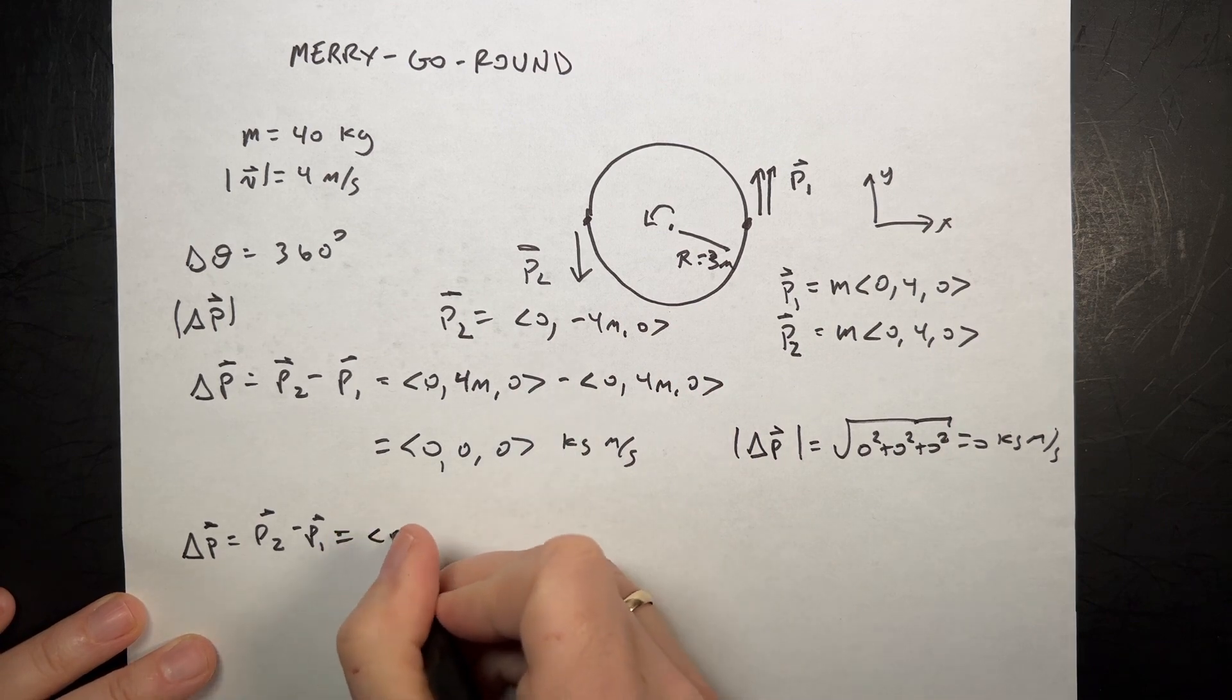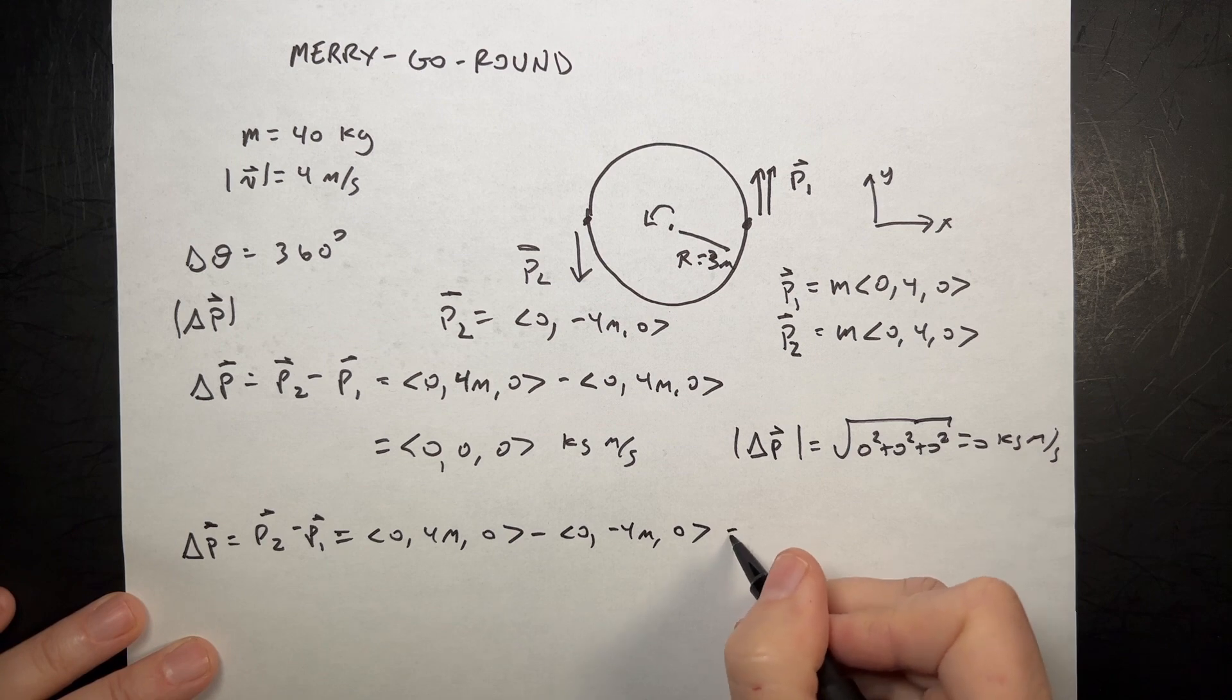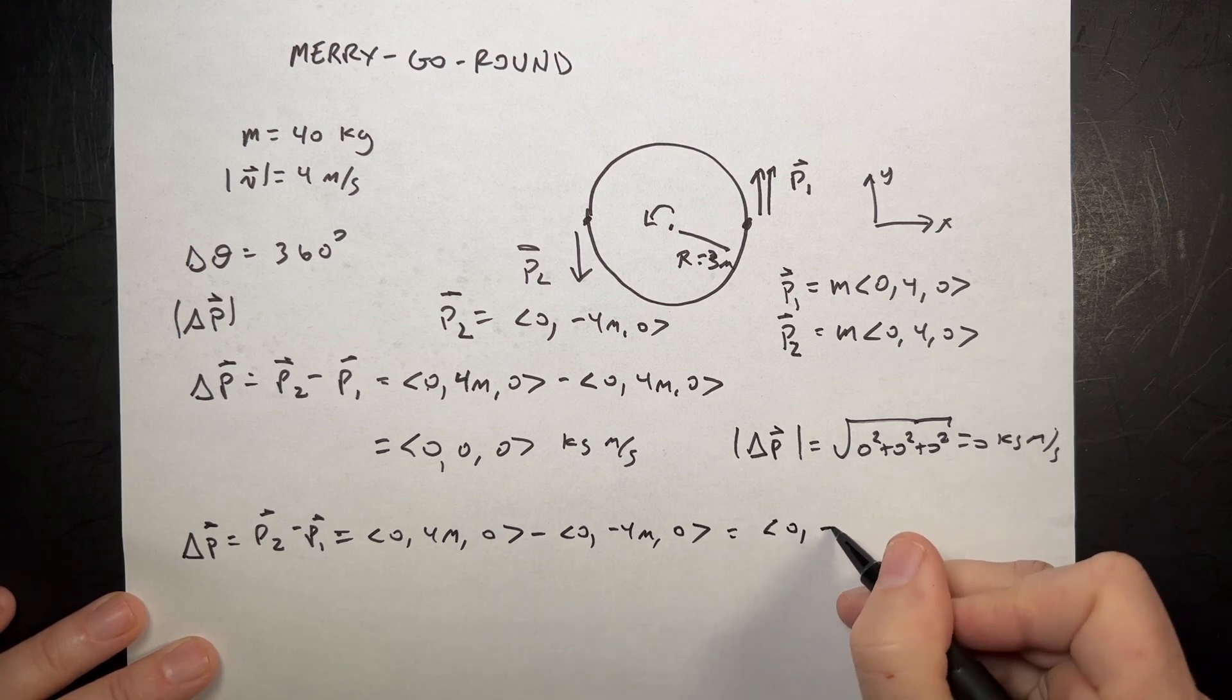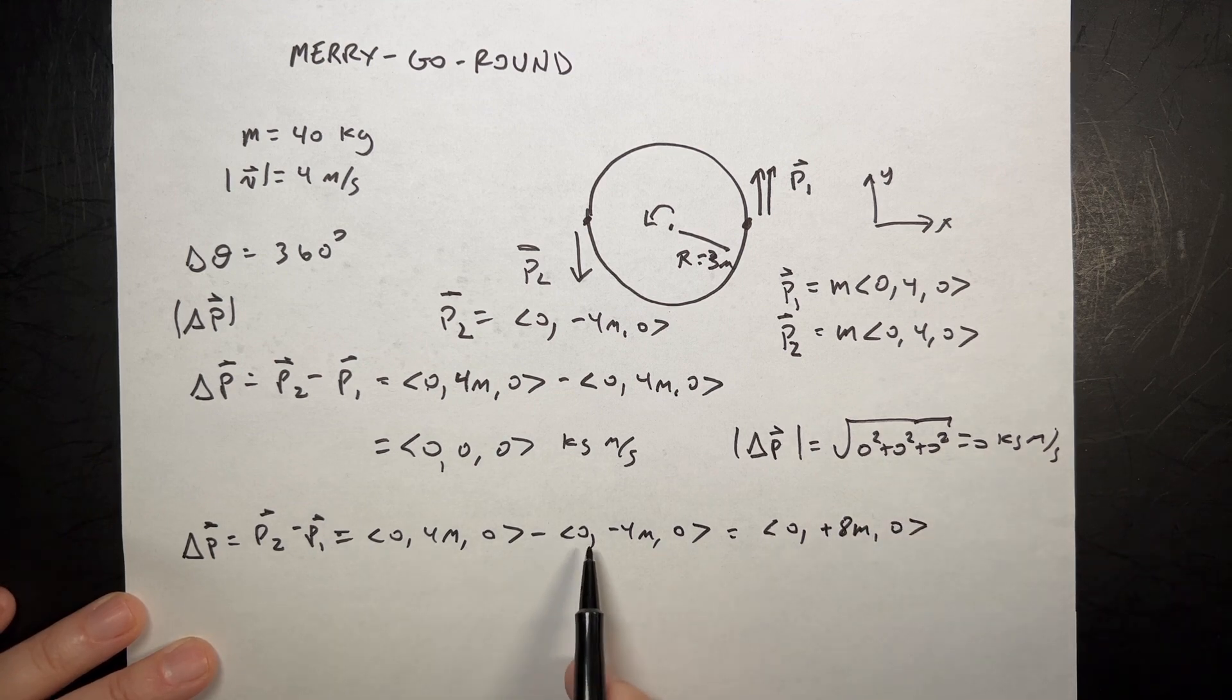So I'm going to get 0, 4m, 0 minus 0, negative 4m, 0. And if I do that, I get 0, negative, yeah negative, no I get plus, 8m, 0. Because 4m minus negative 4m is 8m.